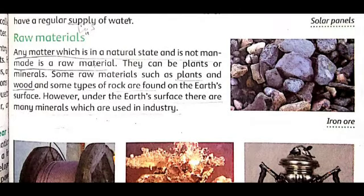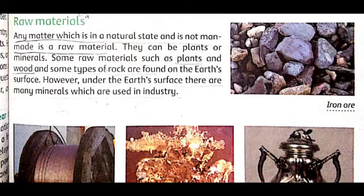The next factor is raw materials. Any material which is in a natural state or is not man-made is called a raw material. Raw materials can be plants or minerals. Some raw materials such as plants, wood, and certain types of rocks are found on the earth's surface.